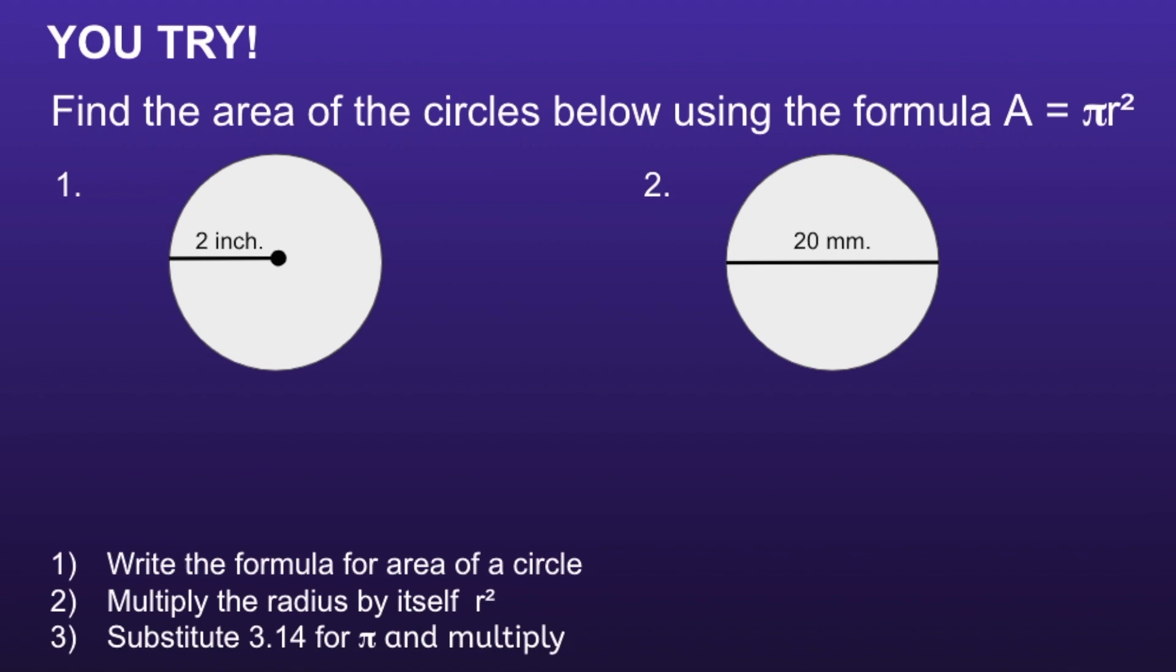Okay, I have two more problems I want you to try. Find the area of the circles below using the formula A equals pi r squared. I would recommend you pause the video now, solve, and then resume when you're ready to see if your solutions are correct.